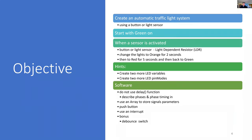The objective is to create an automatic traffic light system using either a button or a light sensor. This project was inspired by the Korowa School, Task 4 in their year 7 and 8 STEM projects. Start with green on, when you press the button and the sensor is activated, it changes to orange or yellow for two seconds, then to red, then back to green again.